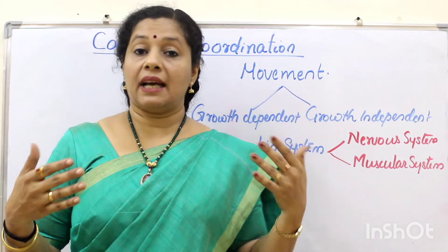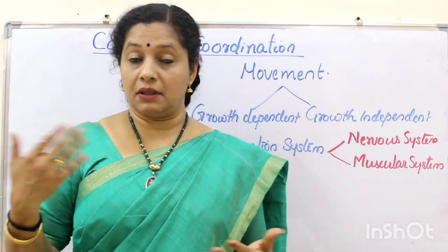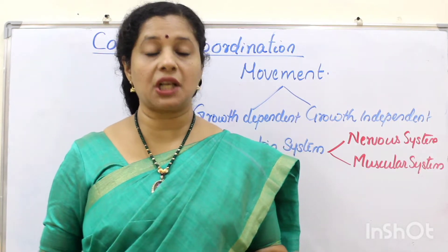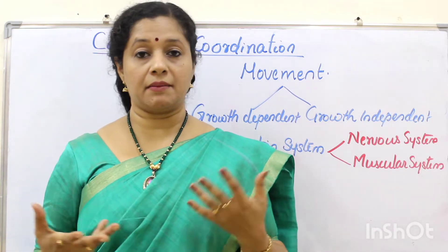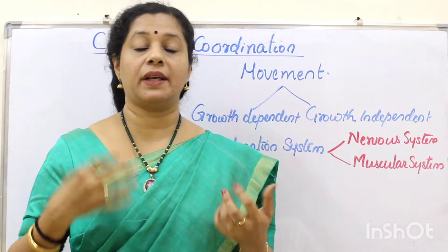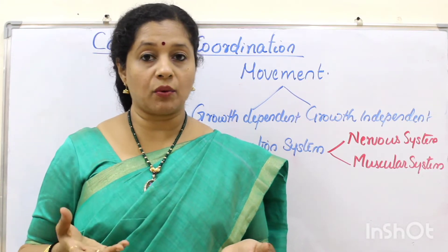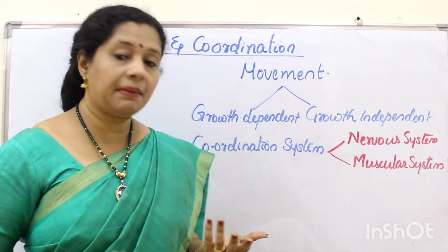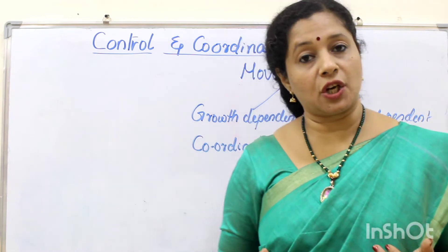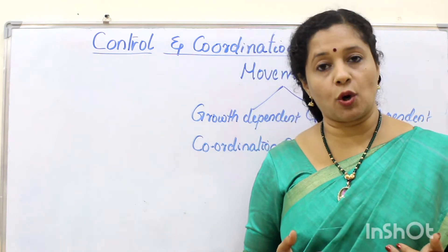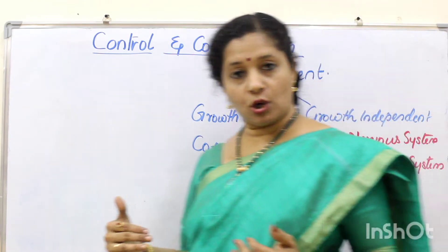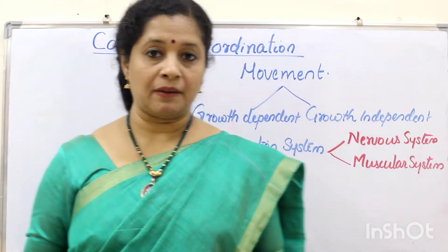The movement in plants is actually a kind of movement without changing position. Whereas in animals, we can have movement without changing position — like my arms, lips, tongue, and eyelids moving — but at the same time I have the capability of changing my position also. This is called locomotion. So animals can locomote where plants can only move.